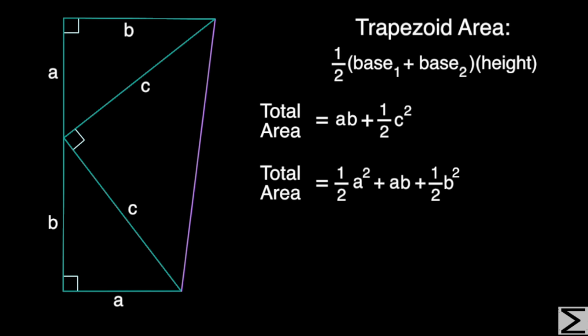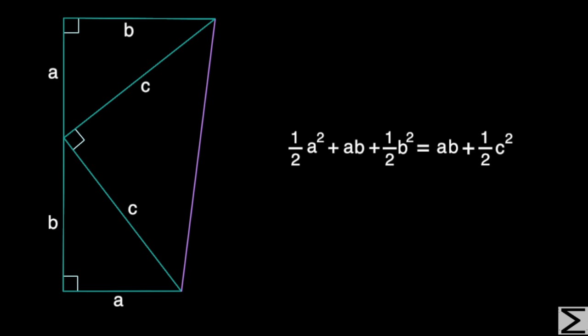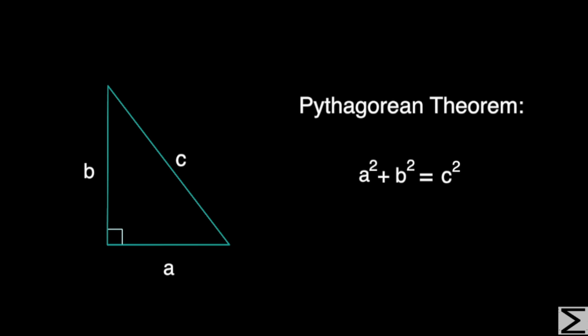Since we have two expressions equal to the same quantity, we can set them equal to each other. From here, we can subtract A times B from both sides. We can divide one half from both sides, or equivalently multiply both sides by two. And what we get is A squared plus B squared equals to C squared, otherwise known as the Pythagorean theorem.